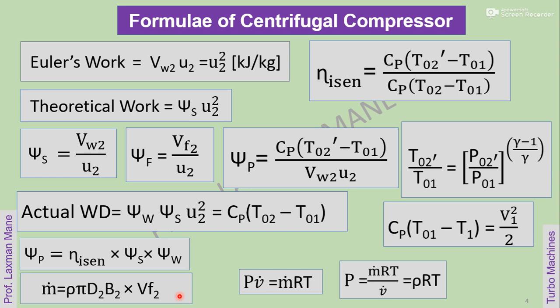The mass flow rate of air in the centrifugal compressor is given as rho into pi D2 B2 into Vf2. Mach number is equal to the ratio of relative velocity at inlet to the square root of gamma into R into T1, where T1 is the inlet temperature in Kelvin.